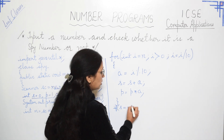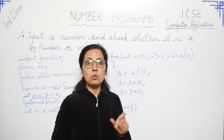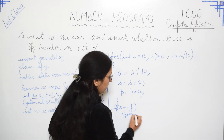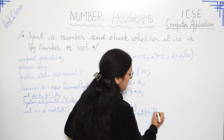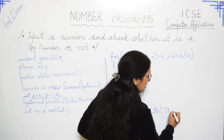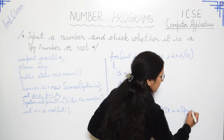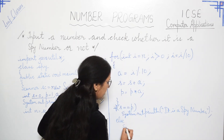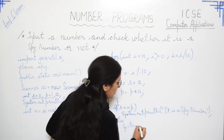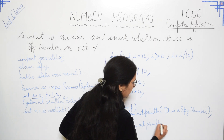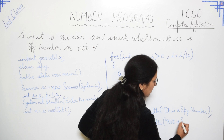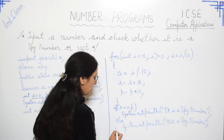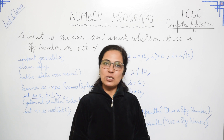After the loop, we check: if s equals p, print 'spy number' — because the sum of digits equals the product of digits. Otherwise, print 'not a spy number'. Then we close the main method and close the class. Several of you had commented to do this program, so here it is — please practice it.